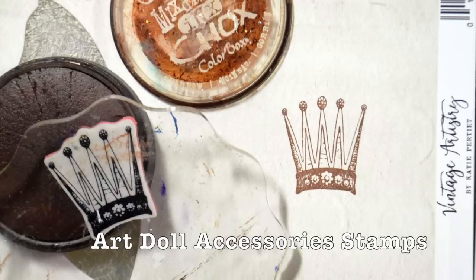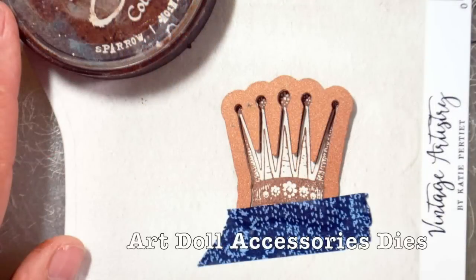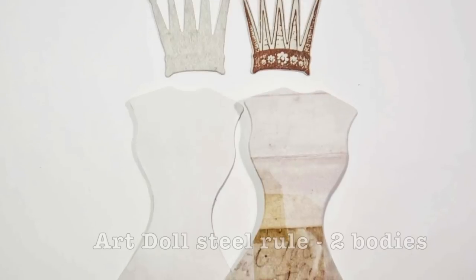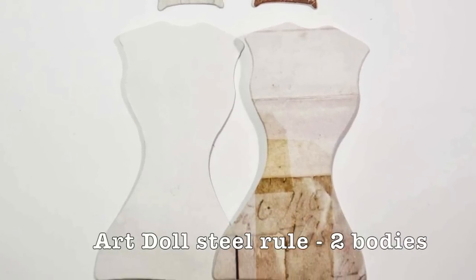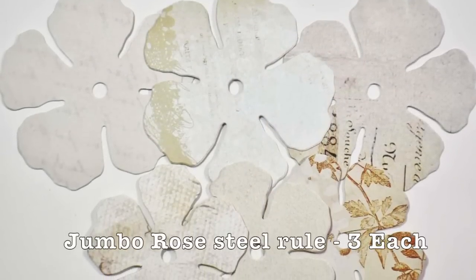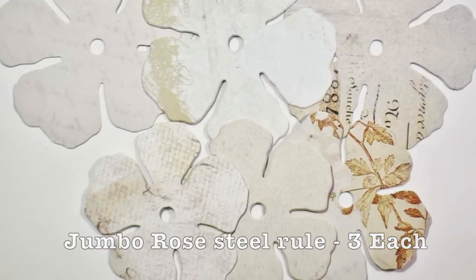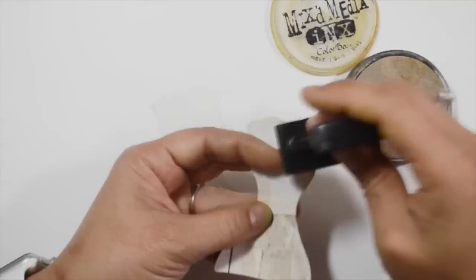The stamp set has some crowns in it, and the die set has dies that go perfectly with these stamps. So you're going to cut out two of those—only one of them needs to be stamped—and then two of the bodies from the art doll set, and then three each of the jumbo rose, three of each size.